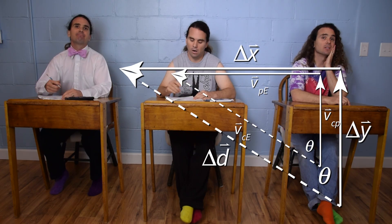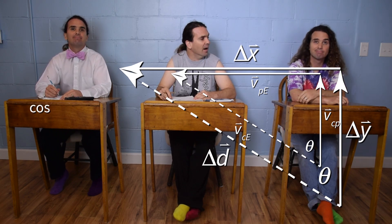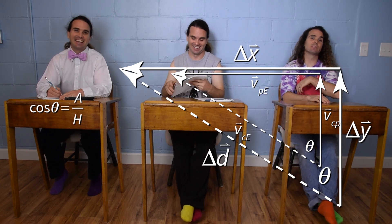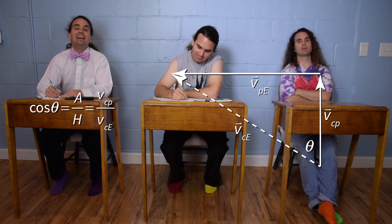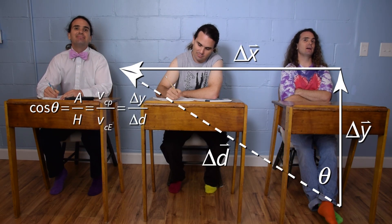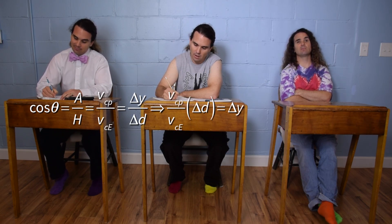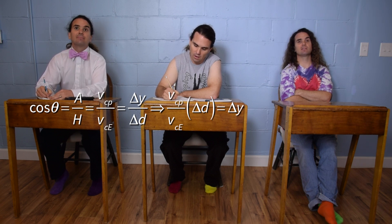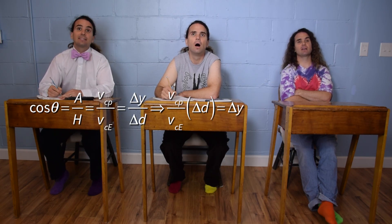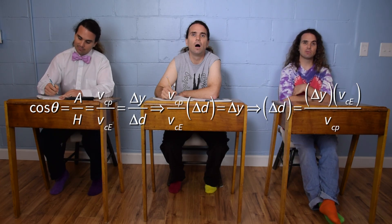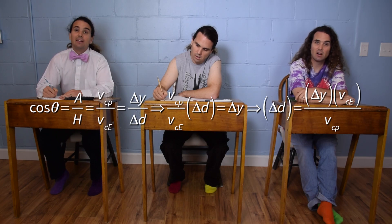Bo, please continue. Because they're similar triangles, they will have the same value for cosine of theta. So the cosine of theta equals adjacent over hypotenuse, which equals the velocity of the car with respect to the paper divided by the velocity of the car with respect to the earth, which is then equal to the displacement in the y direction divided by the hypotenuse displacement. We're solving for delta d, so multiplying both sides and rearranging, the hypotenuse displacement equals the y displacement times the velocity of the car with respect to the earth, all divided by the velocity of the car with respect to the paper.